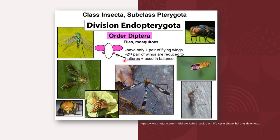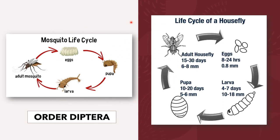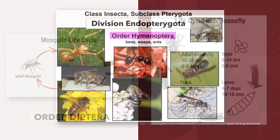The order Diptera includes flies and mosquitoes. They have only one pair of flying wings, and the second pair is reduced to halteres, which are also used for balance. They exhibit a complete type of metamorphosis. The life cycle of the mosquito and housefly includes the egg, larva, pupa, and adult.